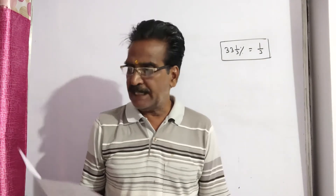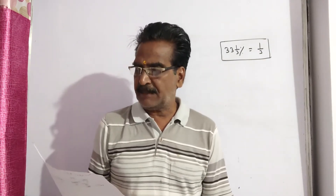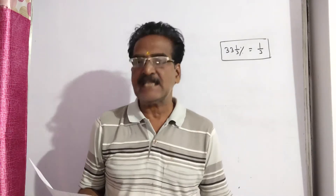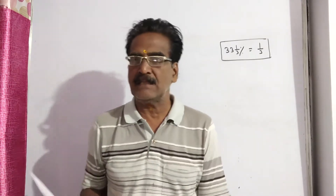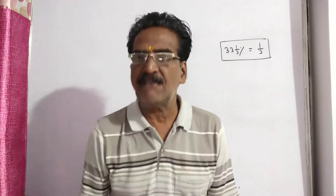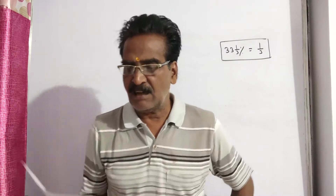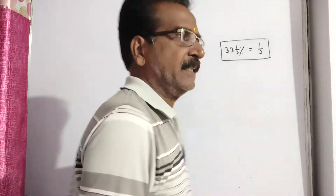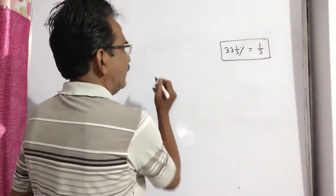If it is sold at 33⅓ percent of this price — that is, 33⅓ percent means 1/3 — if it is sold at 1/3 of its actual selling price, there is a loss of 33⅓ percent.